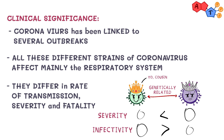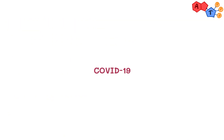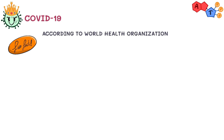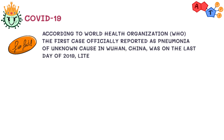Now let's have a closer look at COVID-19. Let's dissect the word: CO is for corona, V for virus, D for disease, and 19 for 2019 — the year it was discovered. According to the World Health Organization, the first case was officially reported as pneumonia of unknown cause in Wuhan, China, on the last day of 2019 — literally December 31st, 2019.